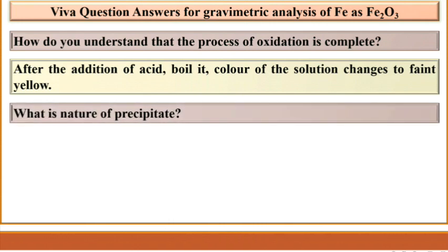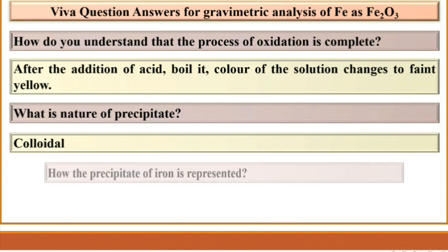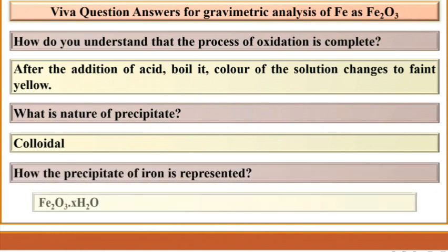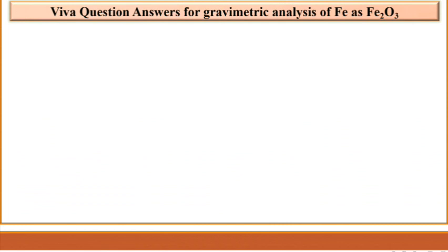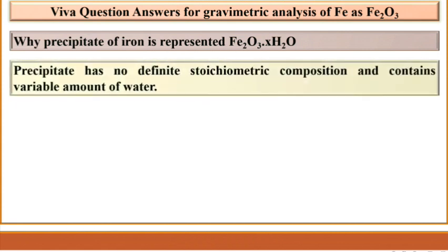What is the nature of the precipitate? The nature of the precipitate is colloidal. How is the precipitate of iron represented? It is represented as Fe₂O₃·xH₂O, because the precipitate has no definite stoichiometric composition and it contains a variable amount of water.